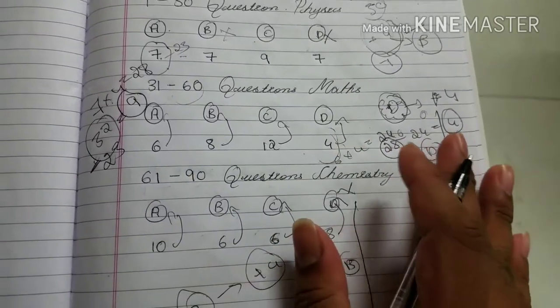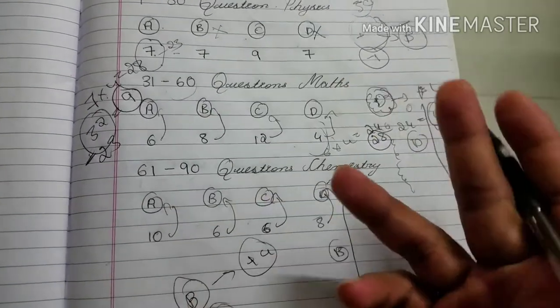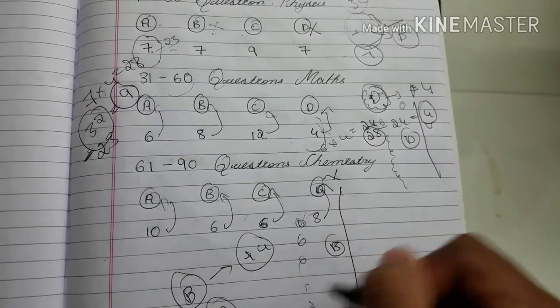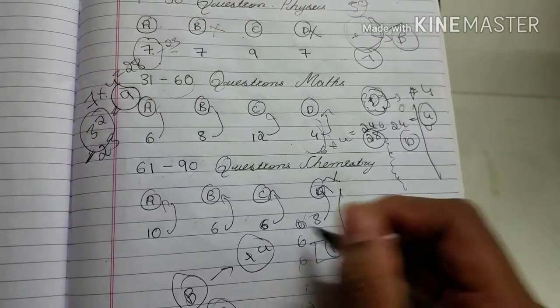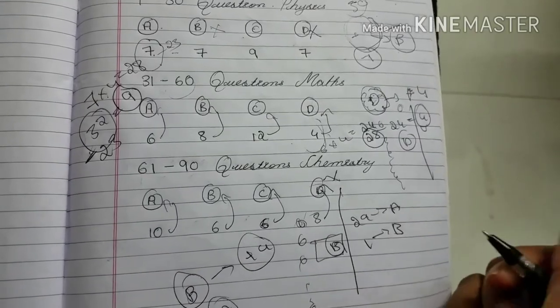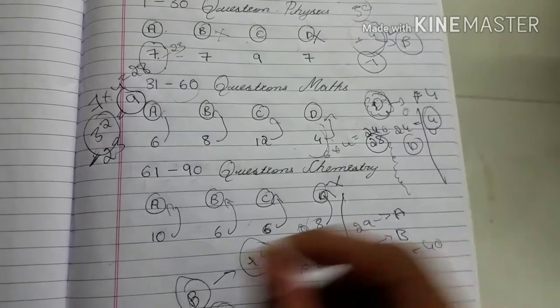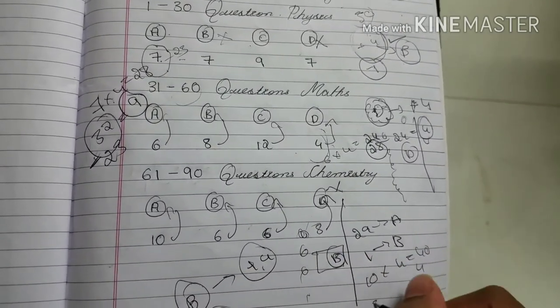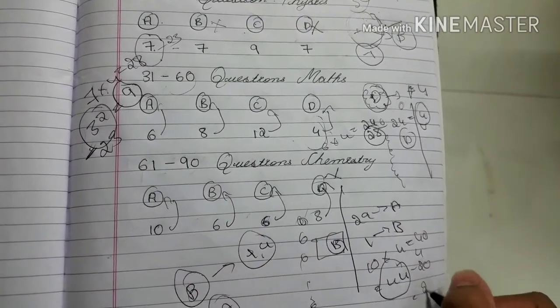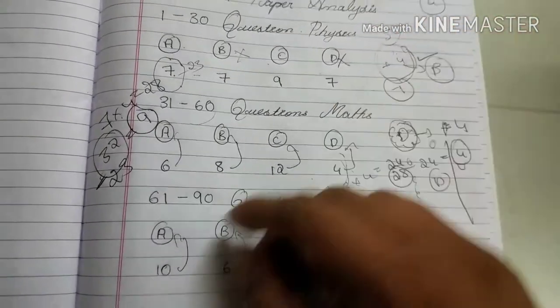In these three you can choose any of them. Suppose you choose A, mark bubble everything as A, leaving this B. So you bubble 29 as A and one as B option. Now 10 are correct, so 10 into 4 equals 40 marks plus this 4 equals 44 marks. Negative marks minus 20 equals 24 marks you can get easily in chemistry.